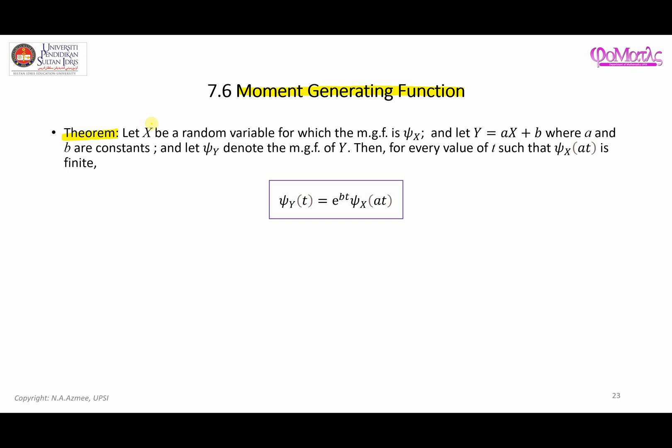So here we have a random variable X where its mgf, the moment generating function, is represented by this formula here. We have another random variable Y which clearly depends on X, and a and b here are constants. The mgf for random variable Y is denoted by this symbol. Therefore, for every value of t such that the mgf for X is finite, we can find the mgf for Y using the formula given.